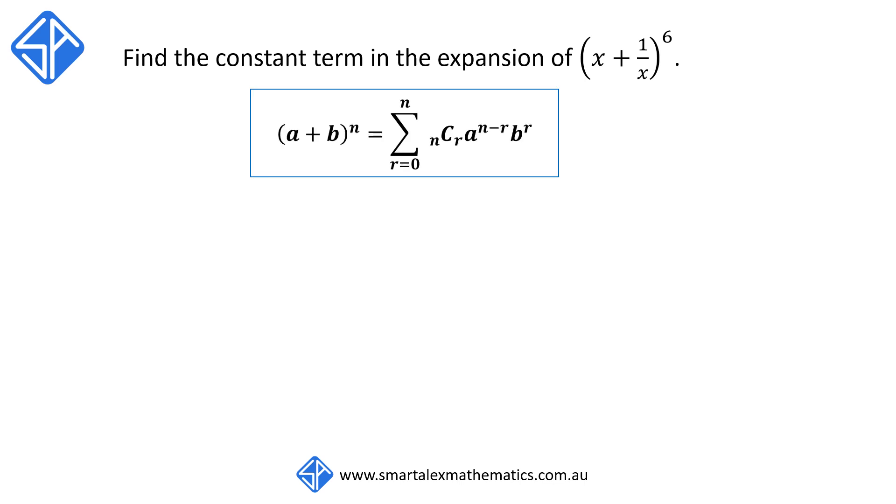To start off, recall that the binomial expansion of a plus b to the n can be written as the summation from r is equal to 0 to n of nCr times a to the n minus r times b to the r.